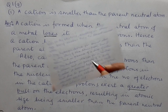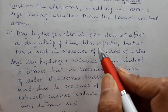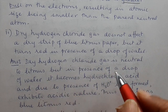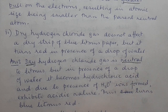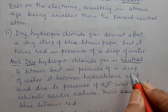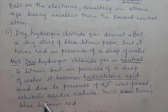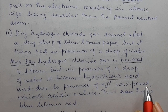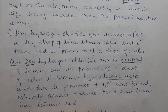Answer 2: Dry hydrogen chloride gas is neutral to litmus. In the presence of a drop of water it becomes hydrochloric acid, and the hydronium ions (H₃O⁺) formed exhibit acidic nature, causing blue litmus to turn red.